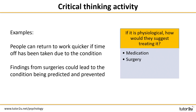Here are two economic impact examples to take away. First, people can return to work quicker if time off has been taken due to the condition — for somebody with OCD, there are cases where people need to take time off work, which costs businesses money and impacts things like pension contributions and tax contribution. So if OCD is being treated with medication, which is widely available, people will be able to return to work quicker. Secondly, findings from surgeries could lead to the condition being predicted or even in some cases prevented.